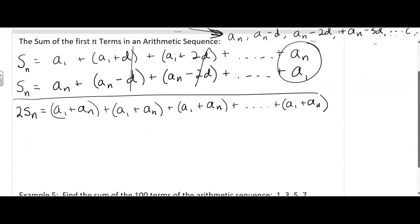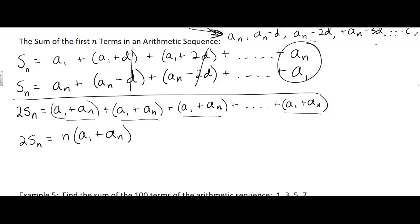So the question is, how many of those do you have? You have n of them, they're all a sub 1 plus a sub n. So 2S sub n equals n times (a sub 1 plus a sub n). But we don't want 2S sub n, we just want S sub n. So divide by 2. And you get this formula. That's where it comes from.